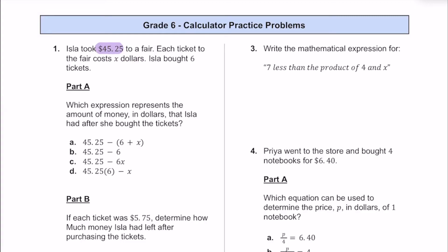Isla is going to be taking $45.25 to the fair. Each ticket at the fair is going to cost X dollars — we don't know how much they'll cost just yet. Isla is going to be buying six of these tickets in total. In part A, we're going to find an algebraic expression representing the amount of money Isla will have after she buys all these tickets.